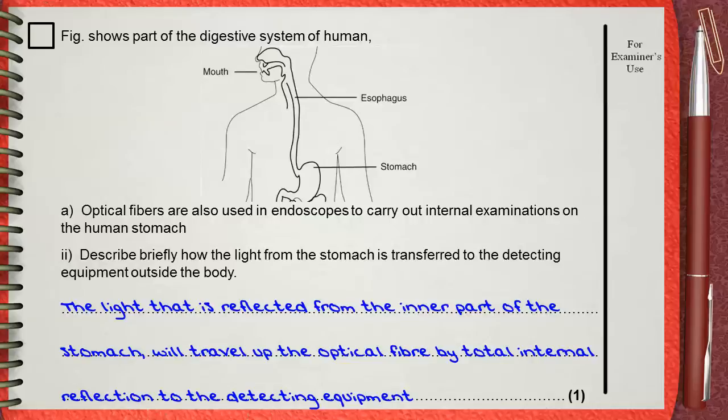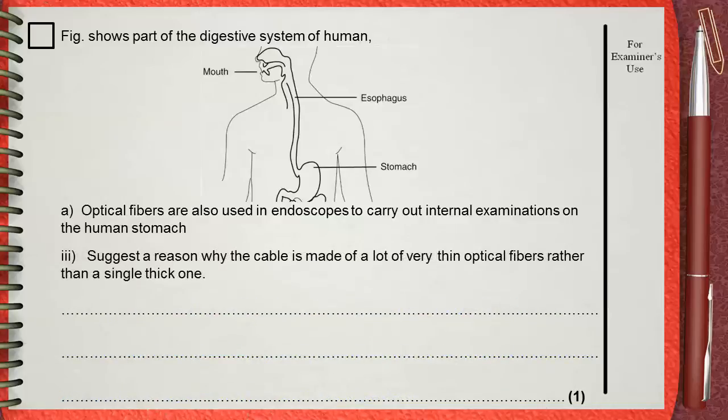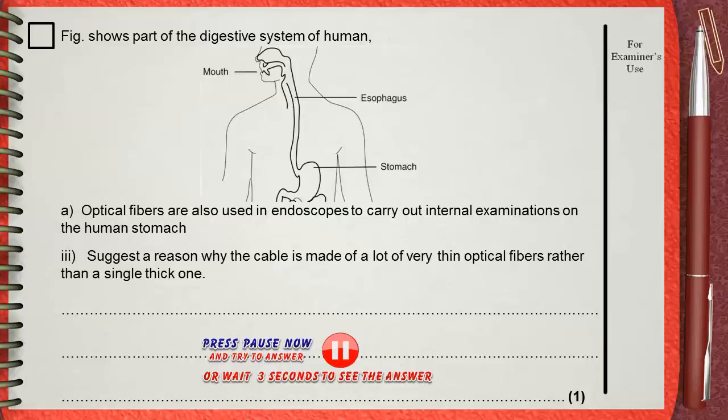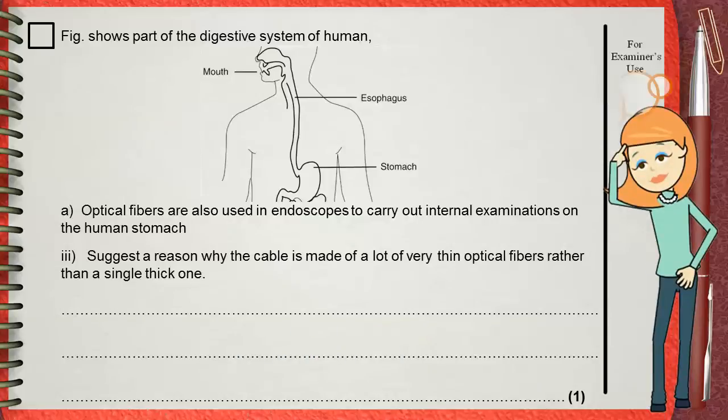Also, this is for one mark. Question three: suggest a reason why the cable is made of a lot of very thin optical fibers rather than a single thick one. This is our optical fiber.